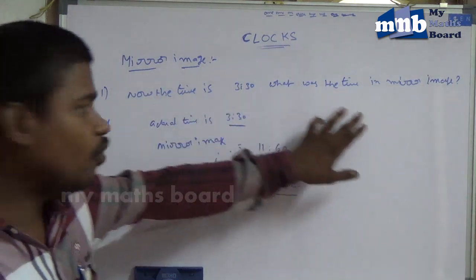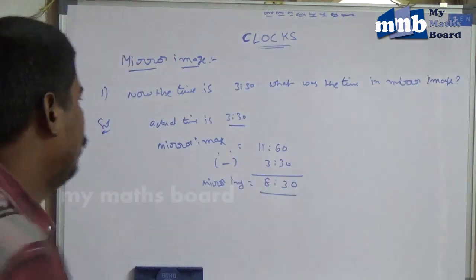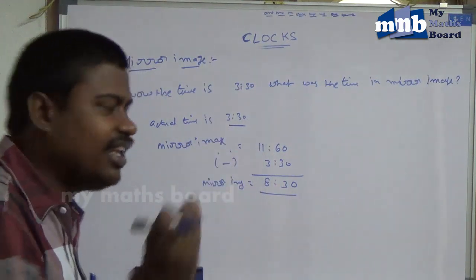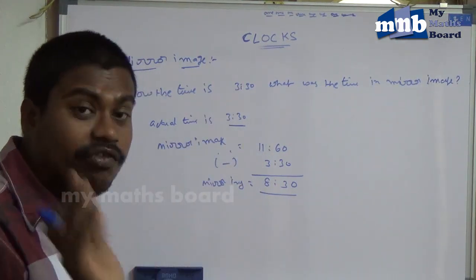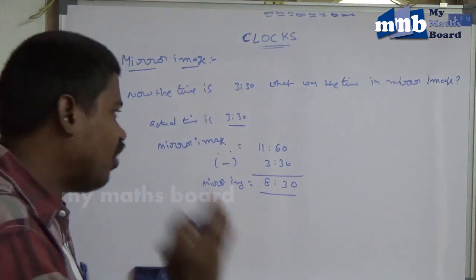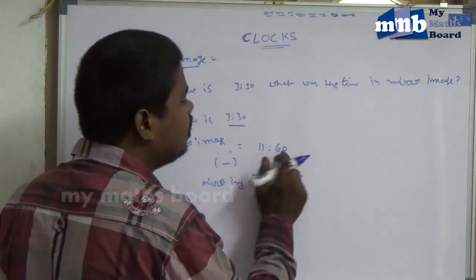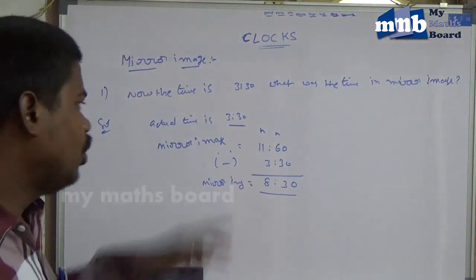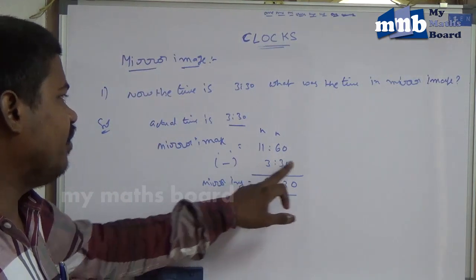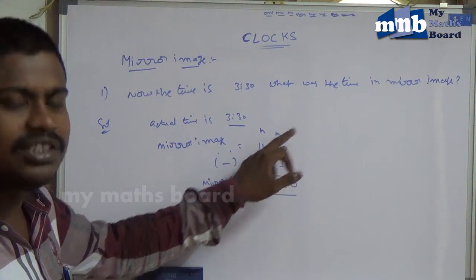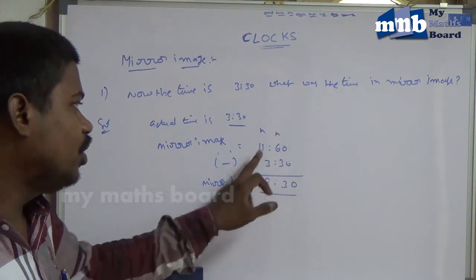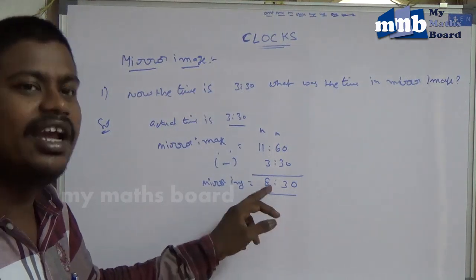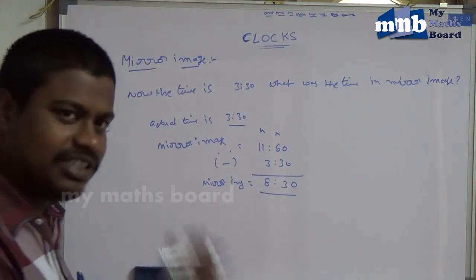Now, the time is 3:30. What is the time in the mirror image? The actual time is 3:30. To get the mirror image, subtract the given time from 12 hours, which is written as 11 hours 60 minutes. Subtract 3:30 from 11 hours 60 minutes. You get 8:30. So the actual time is 3:30, and the mirror time is 8:30. If you want clarity, please check in a mirror.